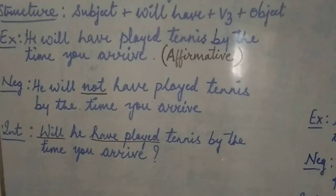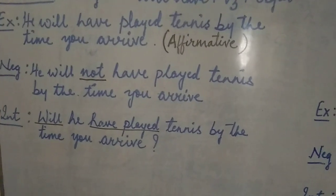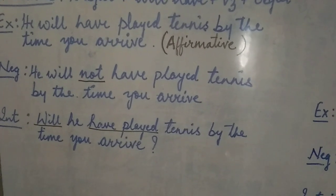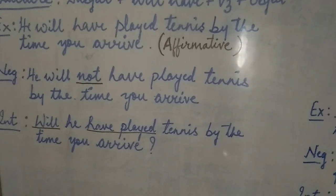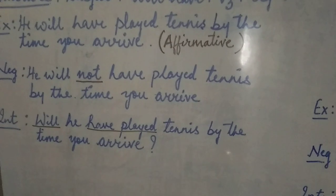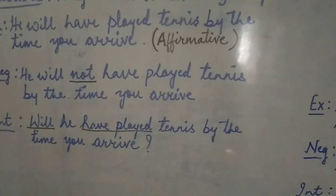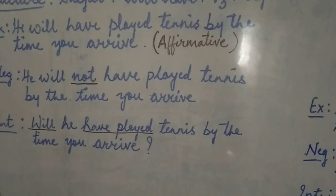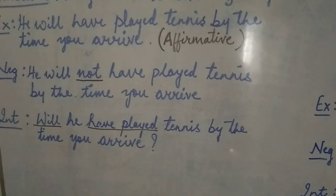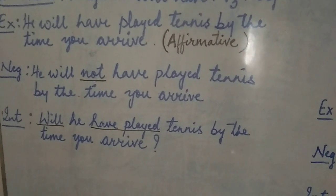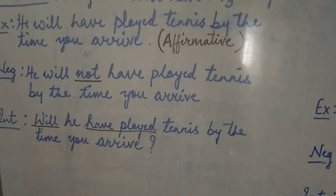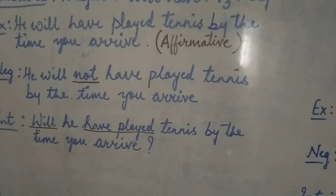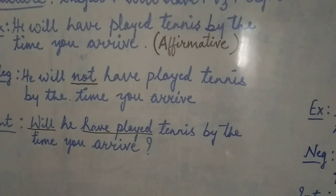Now let's come to the interrogative sentence. In an interrogative sentence, first the auxiliary verb 'will' comes, then the subject, then 'have' with V3 form of the main verb, and then the object of the sentence. So the sentence will be: Will he have played tennis by the time you arrive? You need to put a question mark — punctuation is very important.